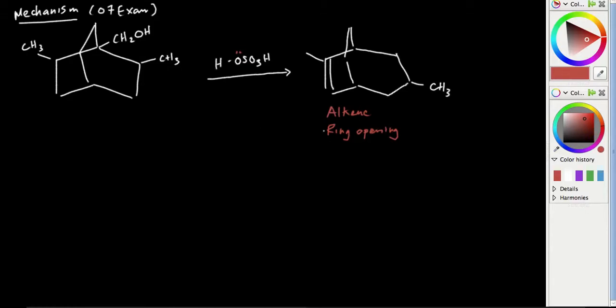For alkene formation, you know there's going to be a step where a base attacks an adjacent proton. In mechanism we only do E1 or SN1, right? So if it's going to be elimination, if I'm going to form an alkene, then a base has to attack an adjacent proton and the proton has to be adjacent to a carbocation.